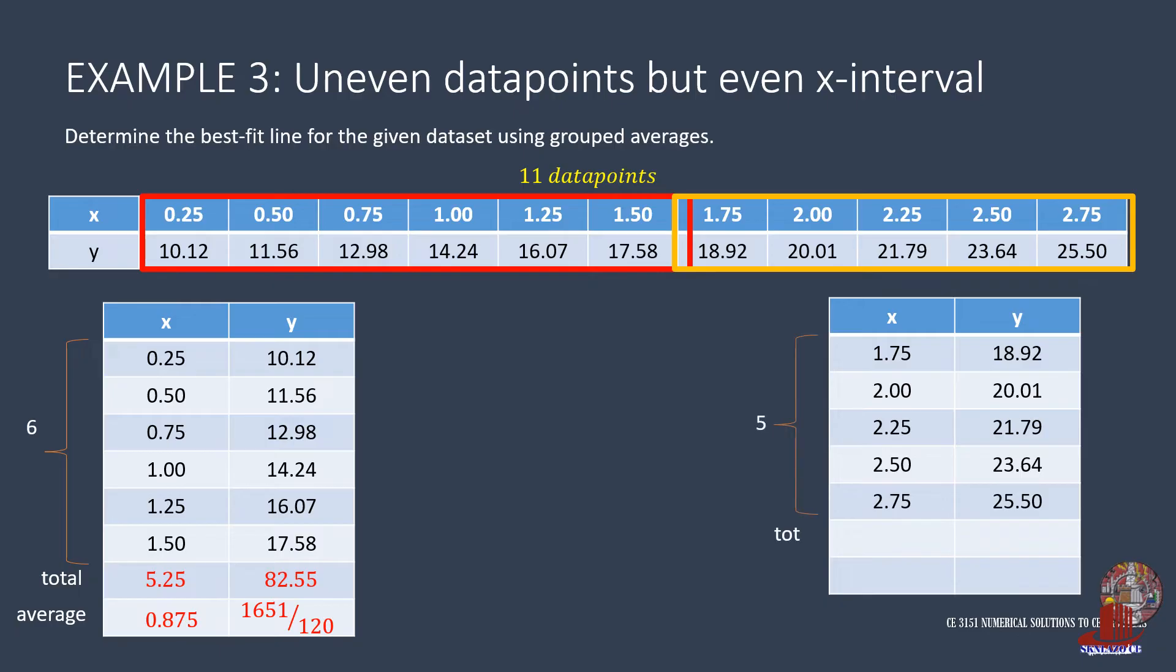The second group contains the last 5 data points from x equal to 1.75 to x equal to 2.75. The total of x values is 11.25, and their average is 2.25. The summation of y is solved through 18.92, add 20.01, plus 21.79, 23.64, and 25.5, which gives 109.86. The average is taken from 109.86 divided by 5 to have 21.972.